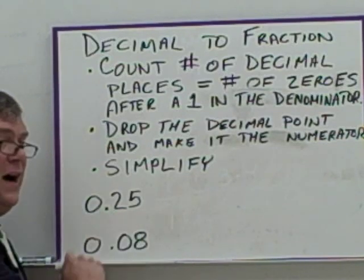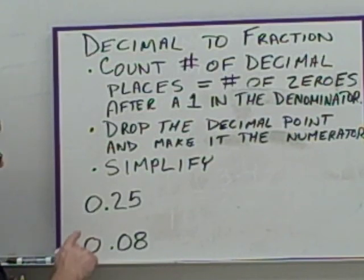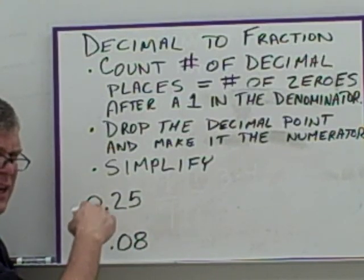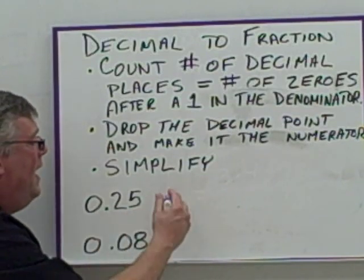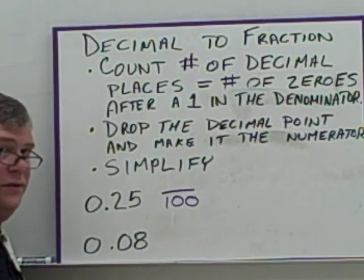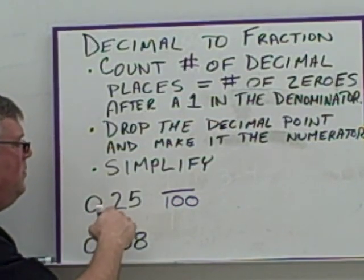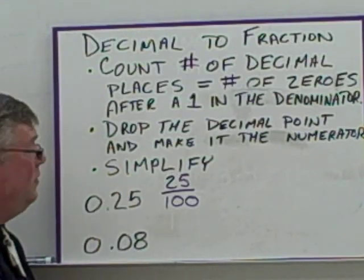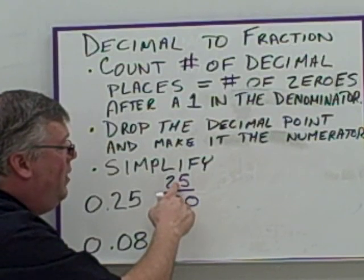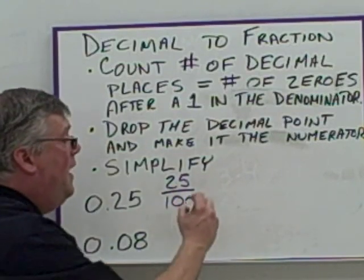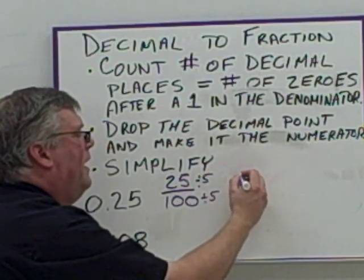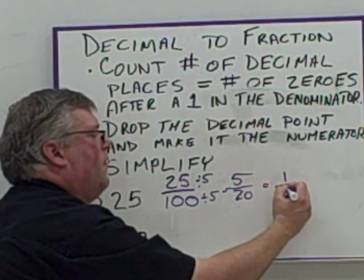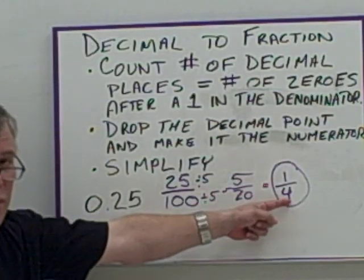Here we have 0.25 — that's two decimal places. I don't count the whole number part, only digits after the decimal point. Two decimal places means the denominator is 100 (one with two zeros). The numerator is 25. I see five and zero, so they share a common factor of five: 25/100 → 5/20, divide by five again → 1/4. So 0.25 is one fourth as a fraction — not surprising, 25 cents is a quarter.